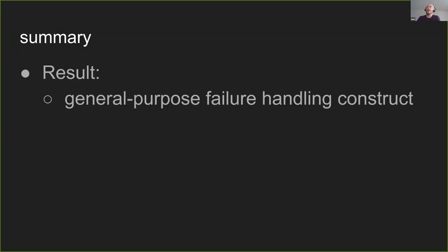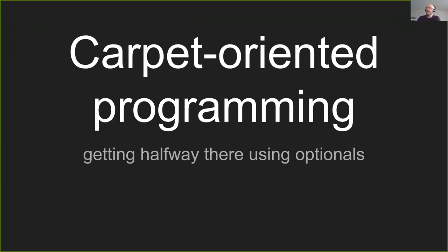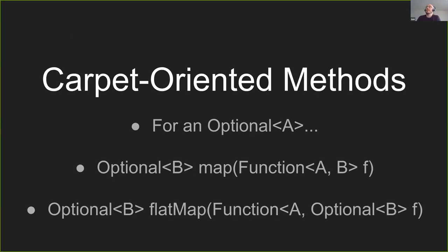We've handled what a Result is. Now let's talk about railway-oriented programming. But before that, to help you understand what it's about, we're going to start with carpet-oriented programming - applying the same principles as railway-oriented programming but just using optionals instead of results. There are basically two methods we care about: map, which takes a function and gives us back an optional; and flat map, which also takes a function but this time from something to an optional of something.